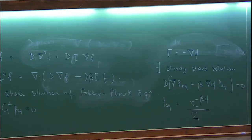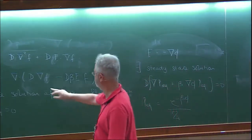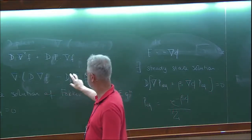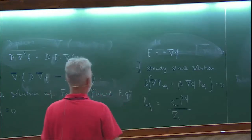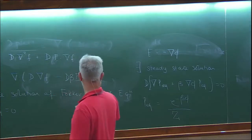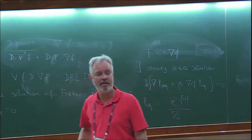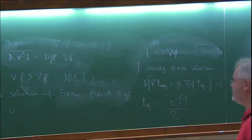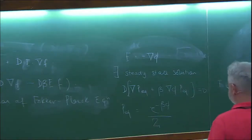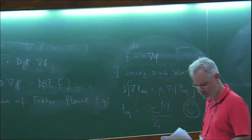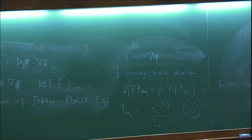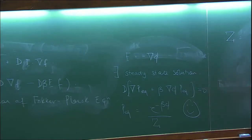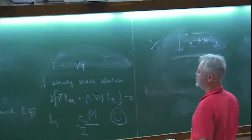This Z is just the normalization — the partition function. You need a finite volume, otherwise the system diffuses forever. One could have derived this by working in the overdamped limit directly, choosing the mobility kappa = beta D to recover the Gibbs-Boltzmann distribution, but starting from the general underdamped process and taking the overdamped limit is more general. Everything is consistent.